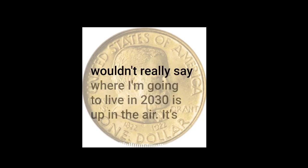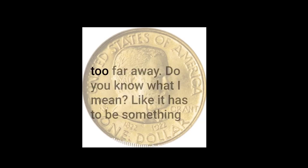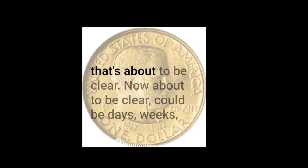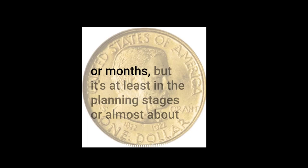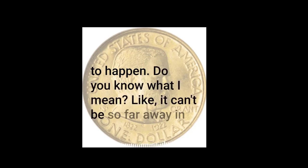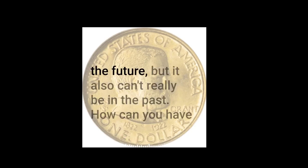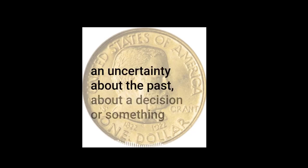I wouldn't really say where I'm going to live in 2030 is up in the air — it's too far away. Do you know what I mean? It has to be something that's about to be clear. Now 'about to be clear' could be days, weeks, or months, but it's at least in the planning stages or almost about to happen. It can't be so far away in the future, but it also can't really be in the past. How can you have uncertainty about the past, about a decision or something that's going to happen?